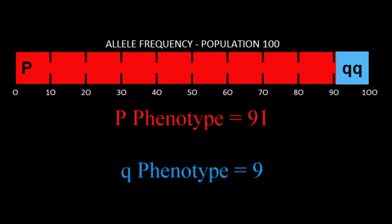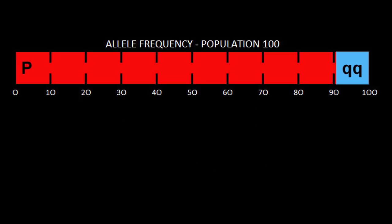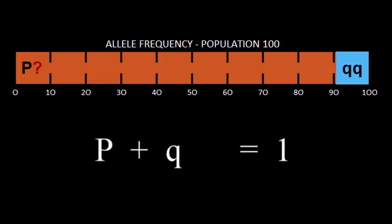In a gene pool of two alleles, the frequency expressing the P phenotype plus those expressing the Q phenotype will always be equal to 100% of the population, or 1. This can be expressed as P plus Q equals 1.